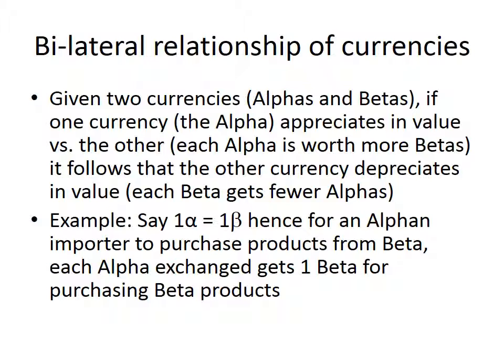It's not entirely accurate to talk about something like the U.S. dollar appreciating in value in isolation. All currencies have a bilateral relationship, and the relationship is inverse. We can't really talk about the dollar or euro or yuan appreciating in value — we talk about it appreciating versus another specific currency. So we can say the U.S. dollar is appreciating against the euro or depreciating against the euro. It's a bilateral, inverse relationship.